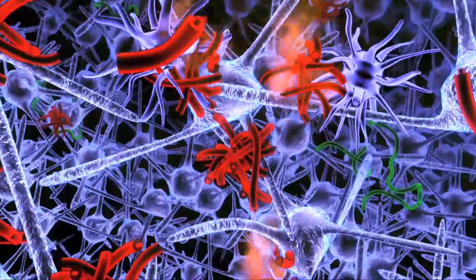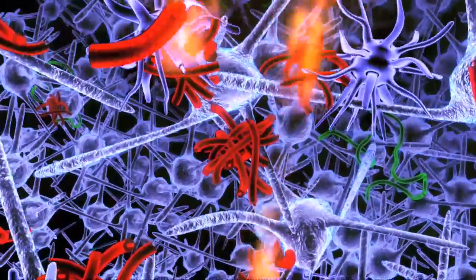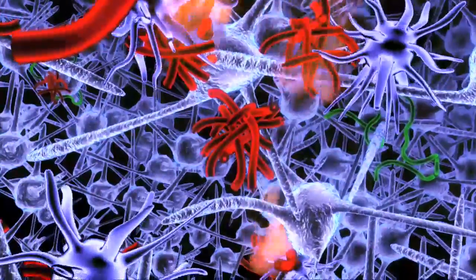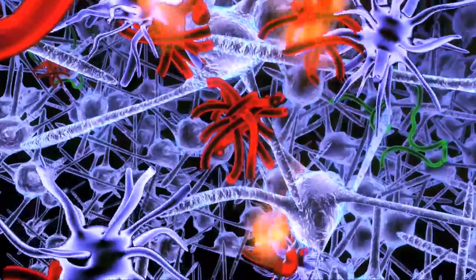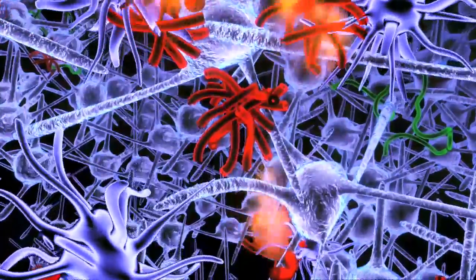The combination of A-beta toxicity outside the brain cell and tangles inside over time results in irreversible damage to brain cells, loss of connections between nerve cells, and cell death.